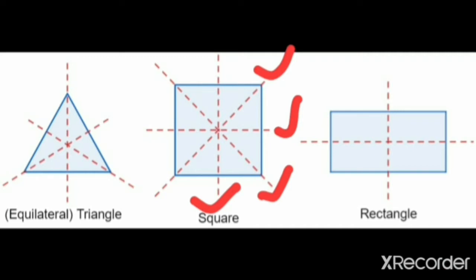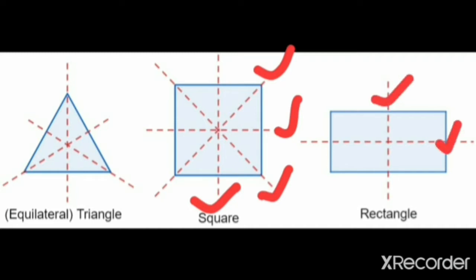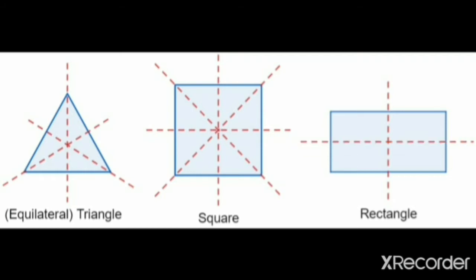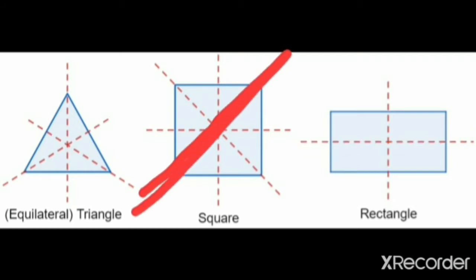A rectangle has two lines of symmetry. If we draw a line in this way, we can divide the rectangle into two parts. Or if we draw a line of symmetry in this way, we can also divide it into two parts.